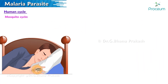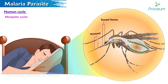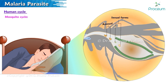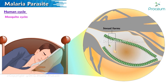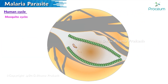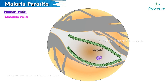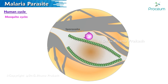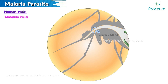Mosquito Cycle: a female Anopheles mosquito takes both asexual and sexual forms during a blood meal. Asexual forms are digested, while sexual forms undergo further development inside the mosquito gut. Gametocytes convert into macro and micro gametocytes, which fuse to form a zygote, then an ookinete. It penetrates the gastrointestinal wall and forms an oocyst, which bursts and releases sporozoites that are transported to the salivary gland.